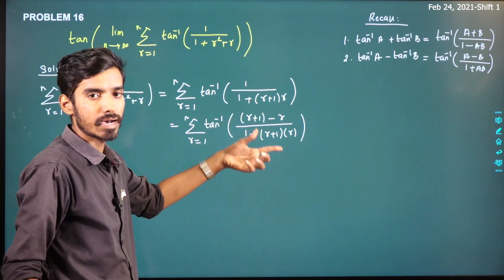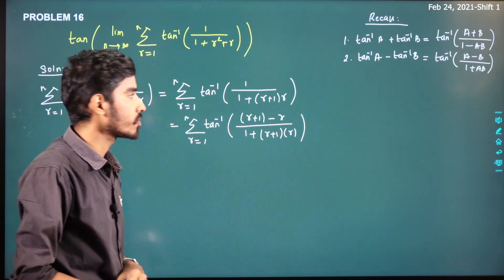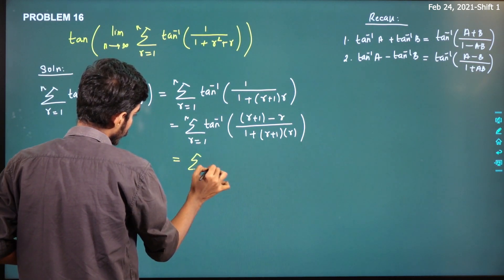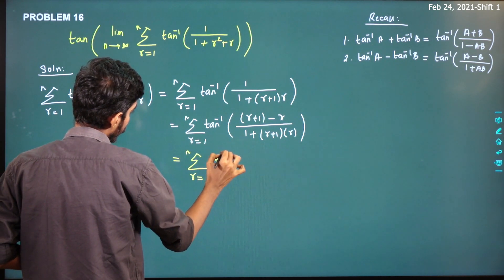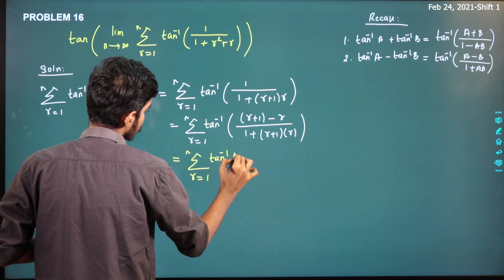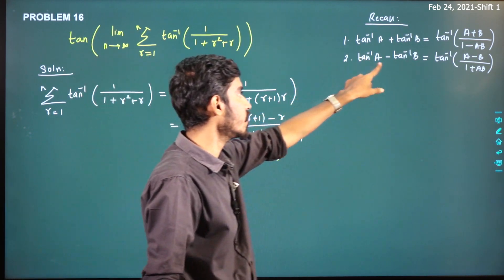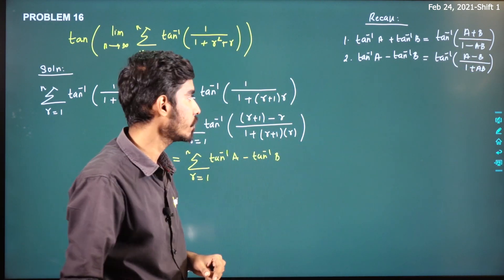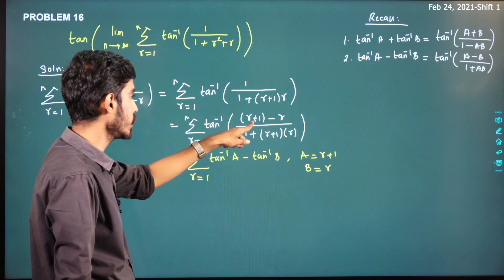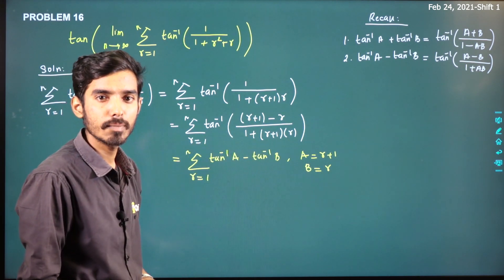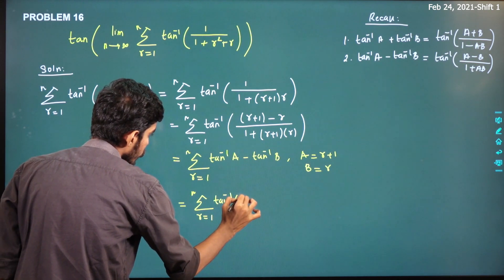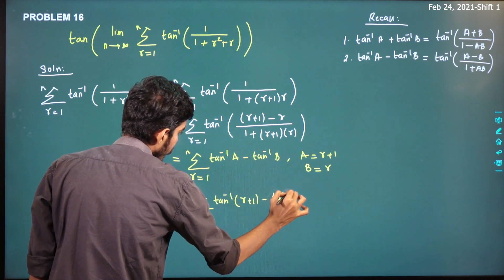Since r plus 1 minus r equals 1, and 1 equals 1, tan inverse of this can be written using the difference formula: tan inverse of a minus tan inverse of b. So this summation becomes summation r from 1 to n of [tan inverse of (r plus 1) minus tan inverse of r].